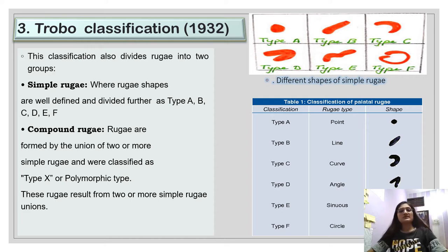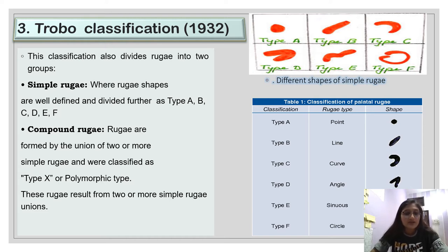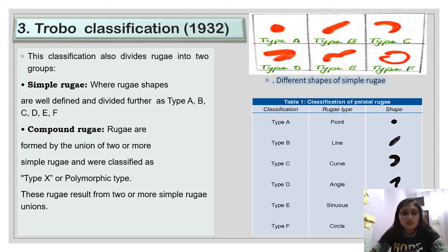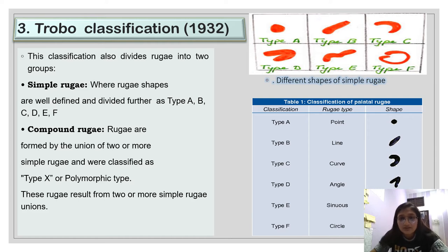The third classification was given by Trobo in 1932. This classification divides rugae into two groups: simple rugae and compound rugae. Simple rugae are classified as types A through F. Compound rugae result from the union of two or more simple rugae and were classified as type X, or polymorphic type. In the classification table, simple rugae are types A to F, and compound rugae formed by the union of two or more simple rugae are considered type X or polymorphic rugae.